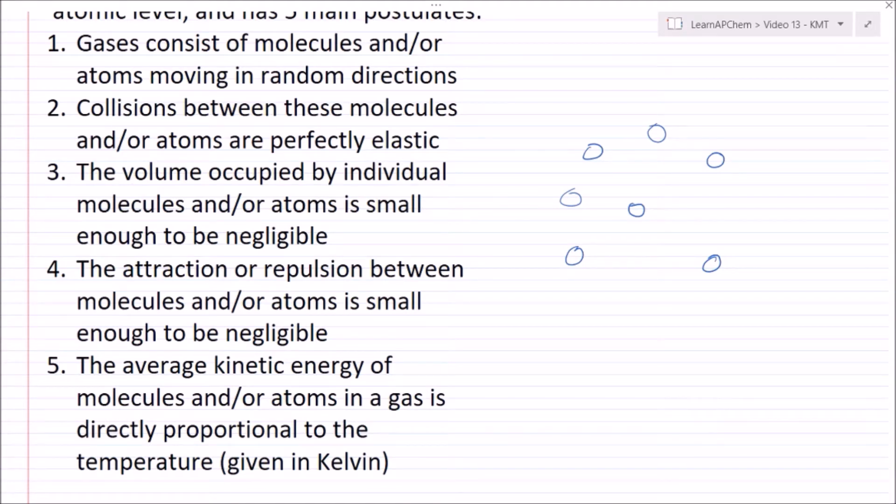Now the fourth is that the attraction or repulsion between molecules and/or atoms is small enough to be negligible. So let's say this side is positive and this side is negative, and the same is true of this gas molecule. KMT's fourth postulate says that this repulsion here is so small that we can just forget about it.